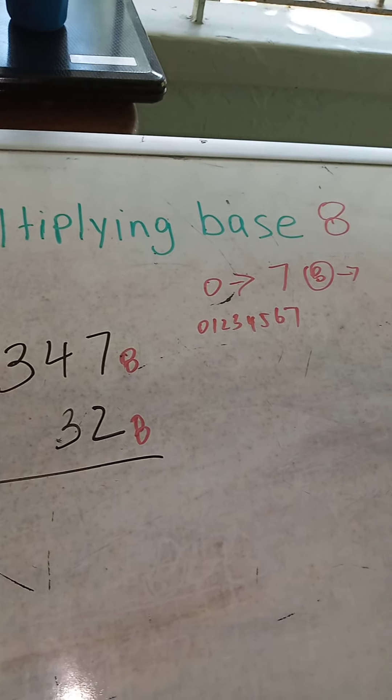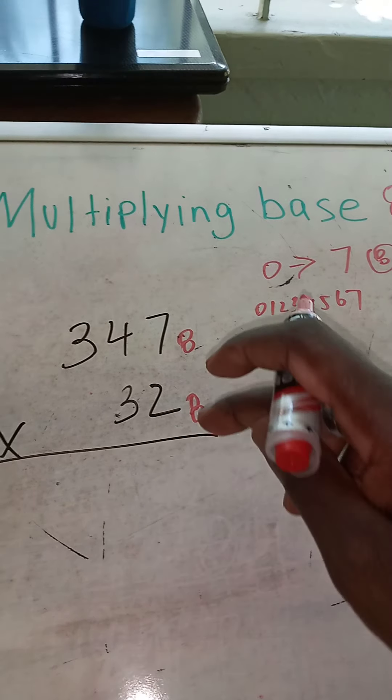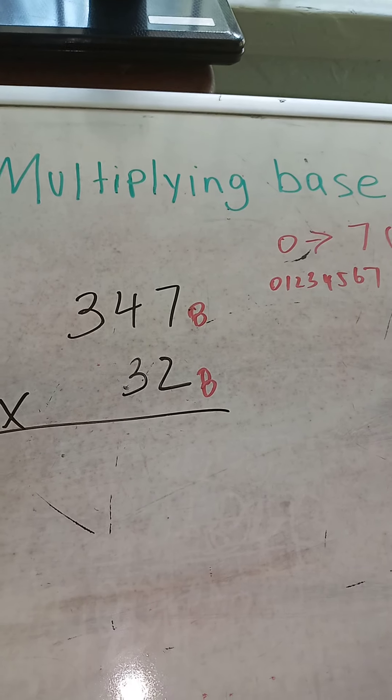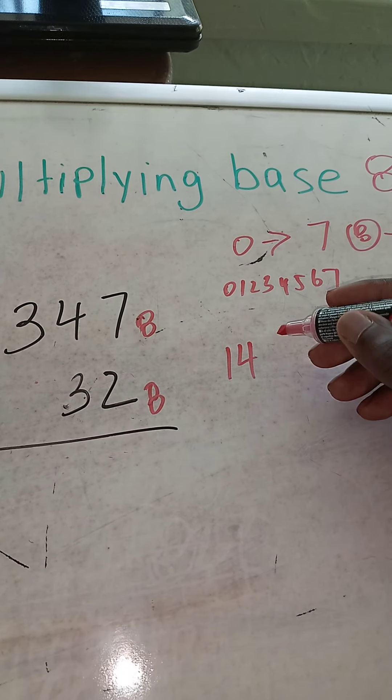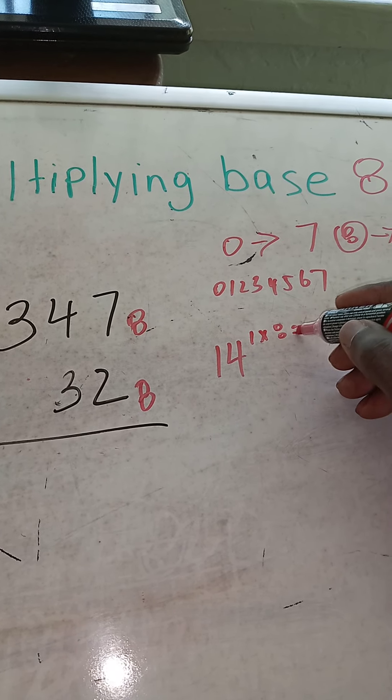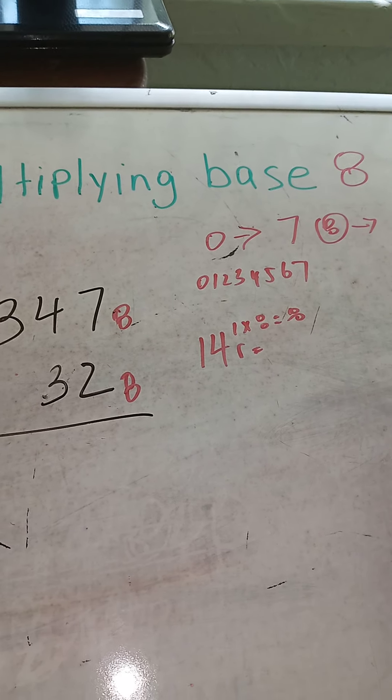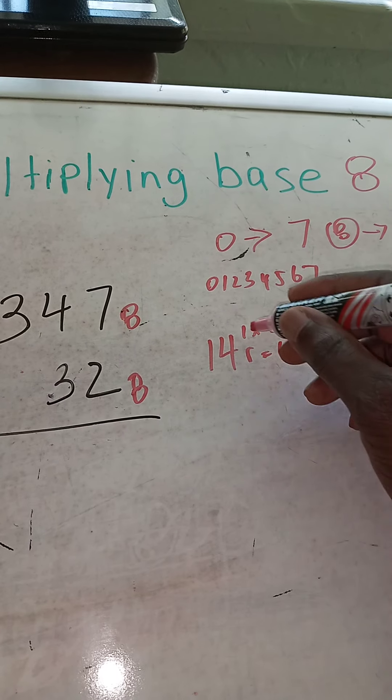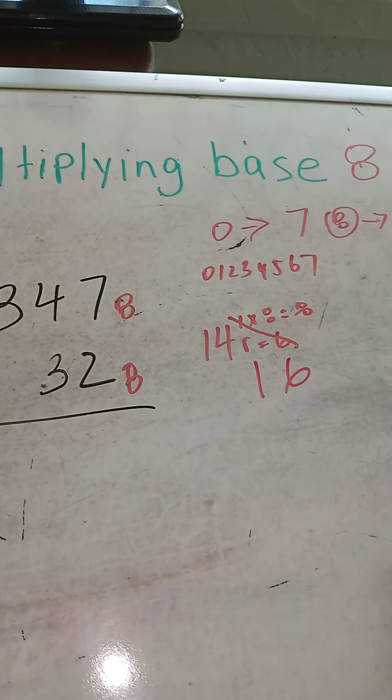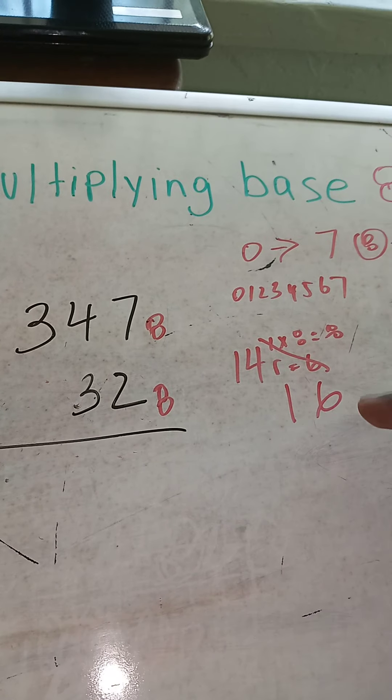Let's jump right into it. 2 times 7 equals 14. We can't write 14, so what do we do? We could say 1 times 8 equals 8, and the remainder, 14 minus 8, is 6. So 1, 6 is going to be what you write for 14. 8 plus 6 equals 14.